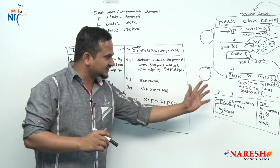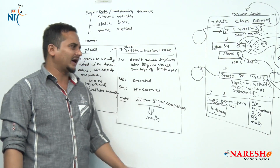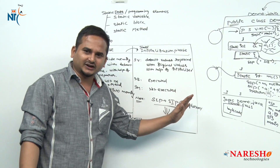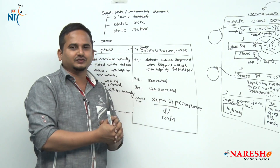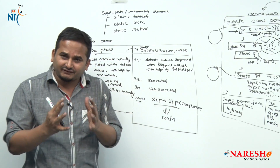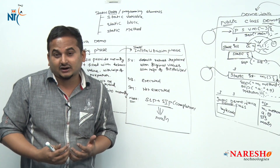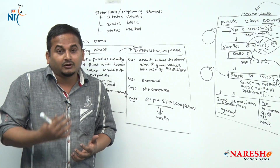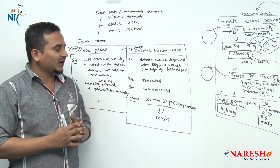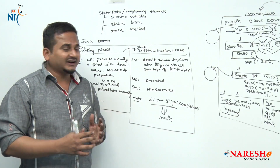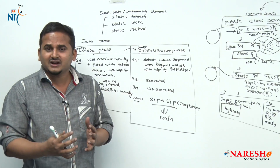By seeing this structure, we can easily tell that before the main method, two phases are going to happen — one is the loading phase, another one is the initialization phase. Once we complete these two phases successfully, control goes to the main method. This is the way JVM loads and initializes static data before the main method, while the .class file is loading from secondary memory to primary memory. I hope you enjoyed this video. In the next video, I am going to talk about how non-static data is going to be loaded and initialized. Thank you.